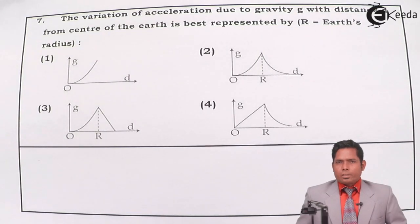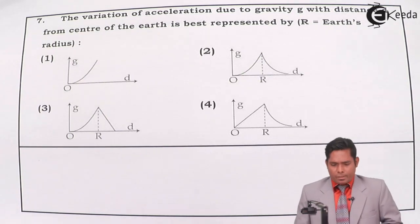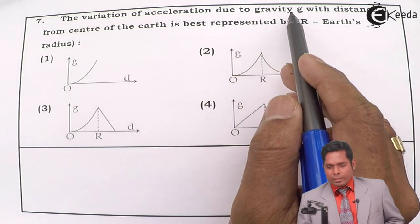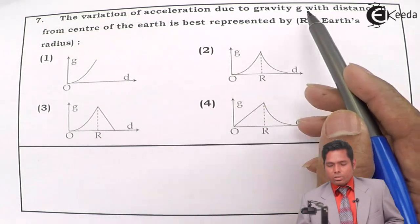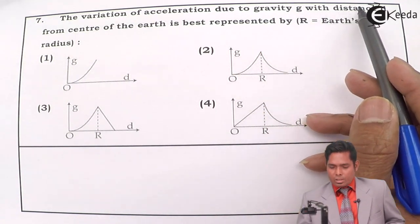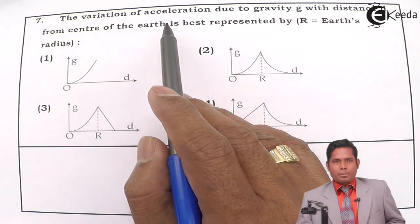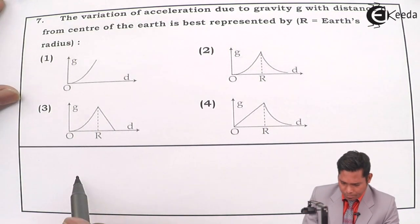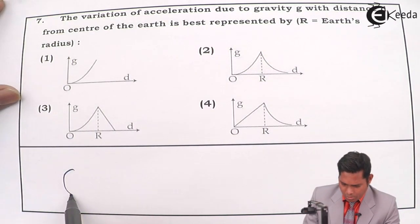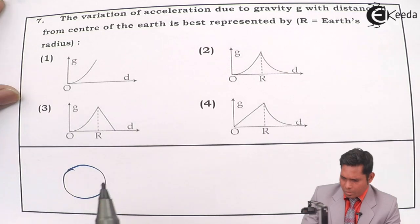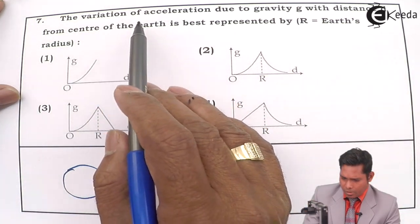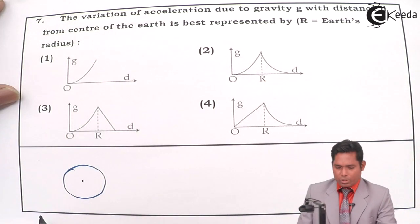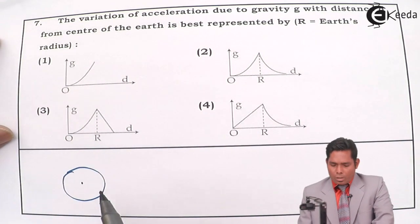Let's take another question — question number seven. The question says: the variation of acceleration due to gravity g with distance d from the center of the earth. If I have to move outward from the center of the earth, I have to move outward.